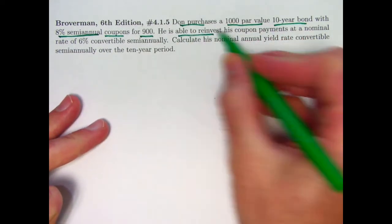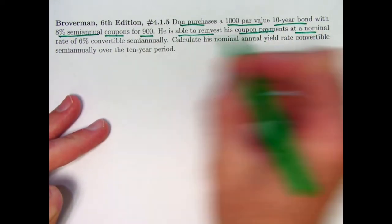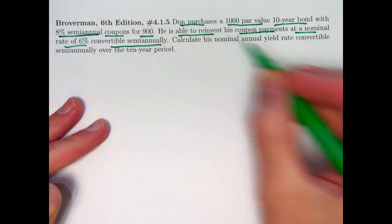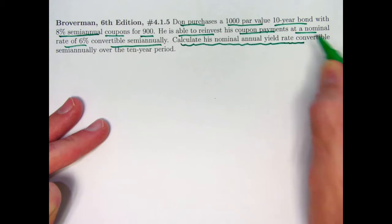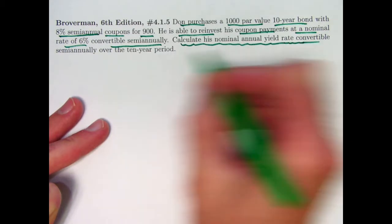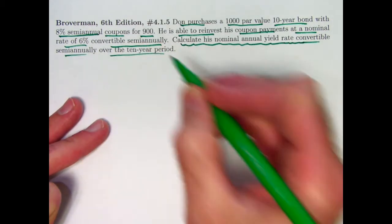He's able to reinvest his coupon payments at a nominal rate of 6% convertible semi-annually. The goal is to calculate the nominal annual yield rate for this overall investment convertible semi-annually over the 10-year period.